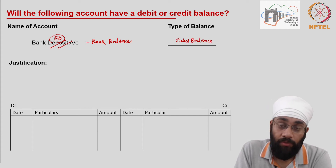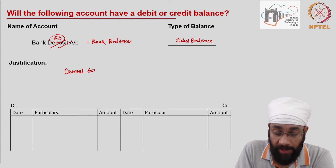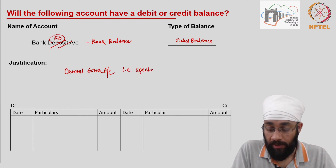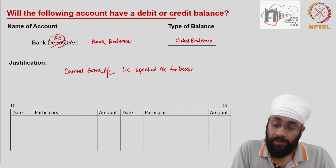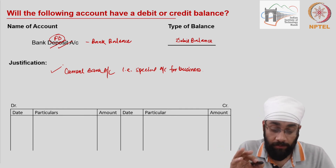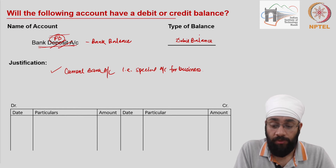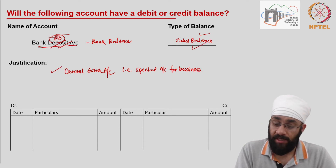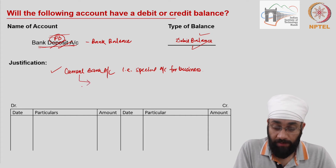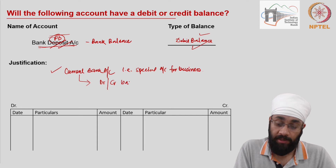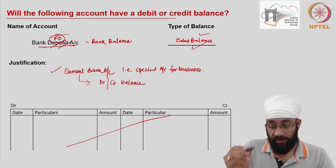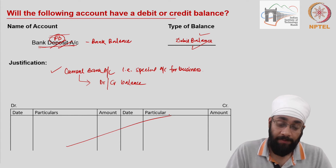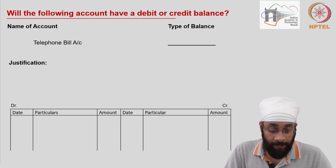If it is a current bank account — a special business bank account — banks extend an overdraft facility to current accounts. This facility is not available for fixed deposit or savings accounts. So for bank deposit or fixed deposit, we say debit balance only. But for a current bank account, it could have either a debit or credit balance. Telephone bill is an expense, and all expenses have a debit balance.